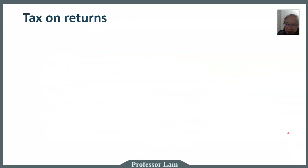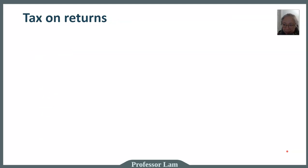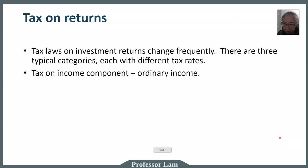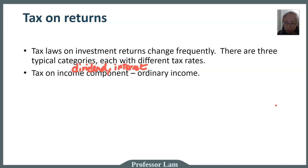When you make money, you have to pay tax on the return, and tax law changes frequently. Instead of giving specific rates, I'll focus on the general categories that typically have different tax implications. There are three types. First is the income component — dividends and interest or coupons on bonds — which are taxed as ordinary income.